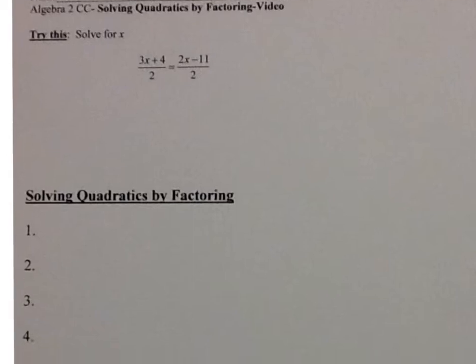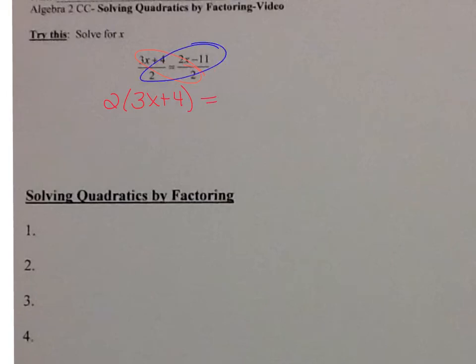I would like you to put me on pause and try to do the try-this. Hopefully you did the try this. Remember, when two fractions equal each other like this, we could cross multiply. So we do 2 times 3x plus 4 equals 2 times 2x minus 11.